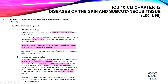For unstageable pressure ulcers, assignment of the code should be based on clinical documentation. These codes are used for pressure ulcers whose stage cannot be clinically determined. This code should not be confused with codes for unspecified stage. When there is no documentation regarding the stage of the pressure ulcer, assign the appropriate code for unspecified stage. If during an encounter the stage of an unstageable pressure ulcer is revealed after debridement, assign only the code for the stage revealed following debridement. Unstageable means we are unable to clinically determine the stage because the ulcer is covered by eschar or has been treated with a skin or muscle graft.